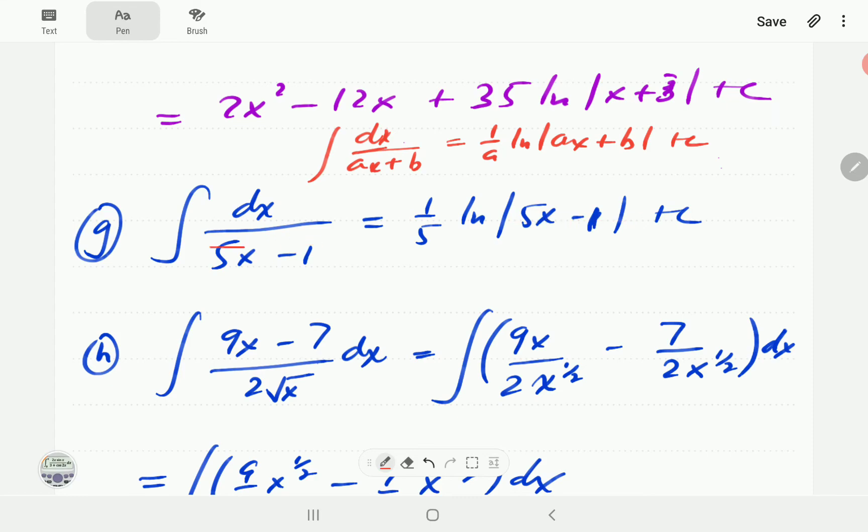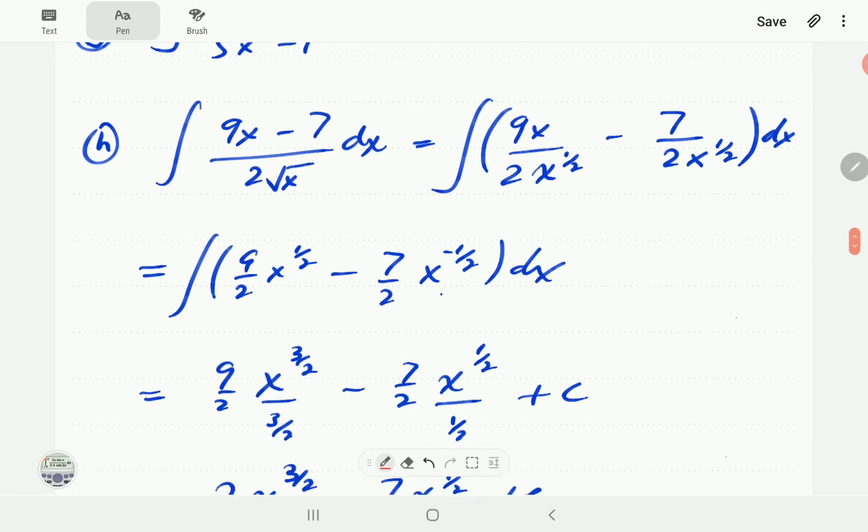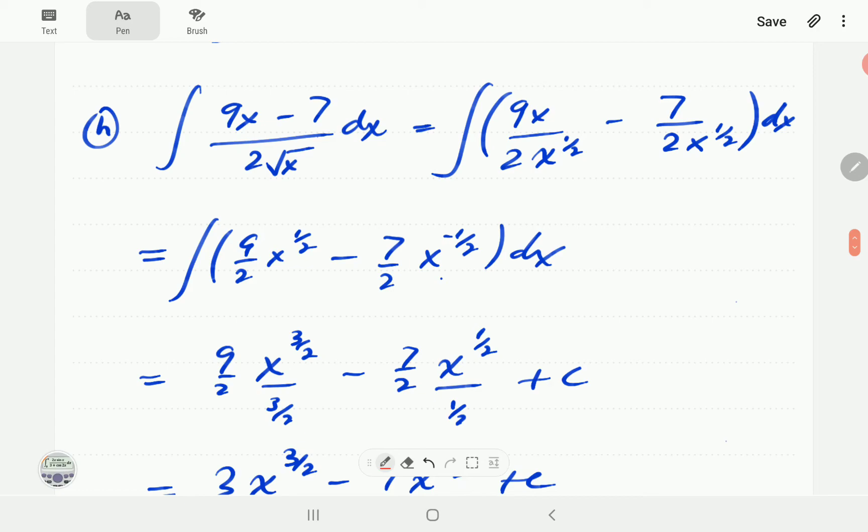Then in h we have got two terms in the numerator. Notice that even though this is strictly not a rational expression because this power of x is not a positive integer, however the rules of distributive property of division still apply. So we can do 9x over this and 7 over 2x to the power half. And then here x over x to the power half is x to the power half.